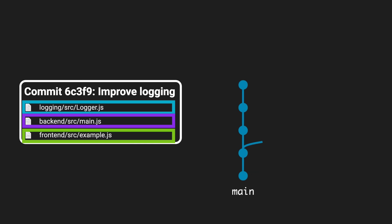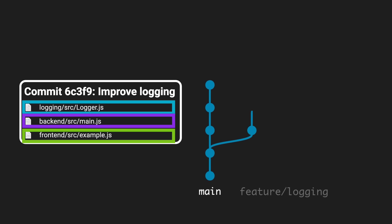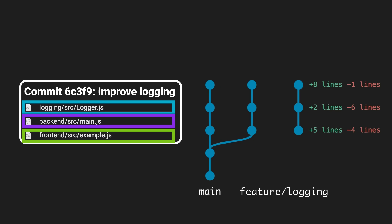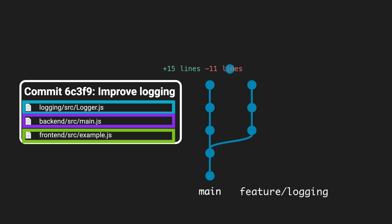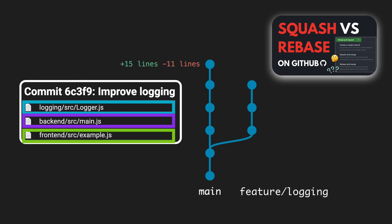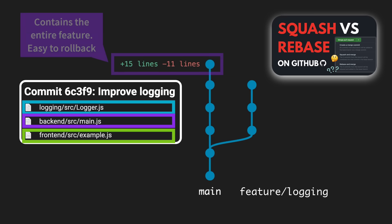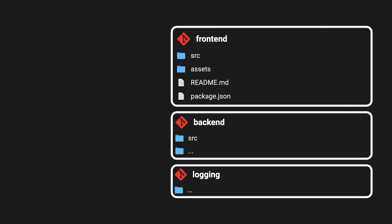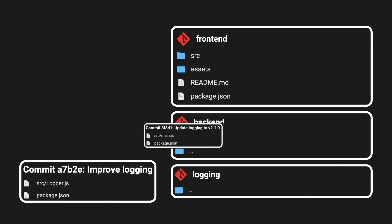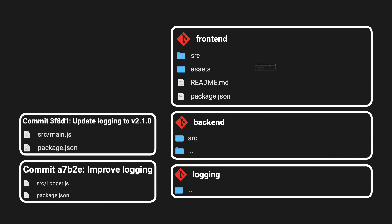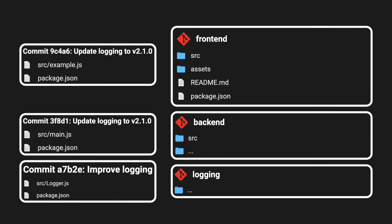If necessary, you can also make multiple commits that you then later squash via pull request. This makes it easy to see in the commit history where a feature that affects the entire system was introduced, and rollbacks are much easier since you can just revert that single commit. Compare this to a polyrepo approach, where the feature is split across many commits over multiple repos, which you'd have to track down and revert separately.